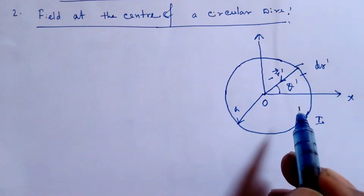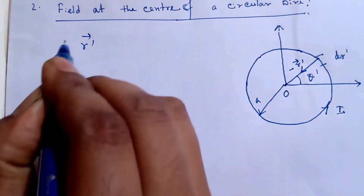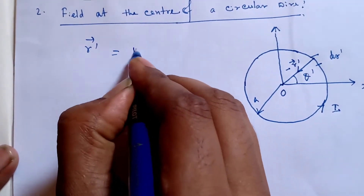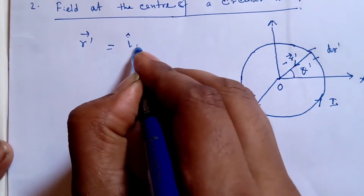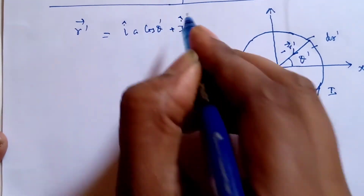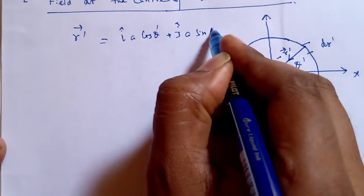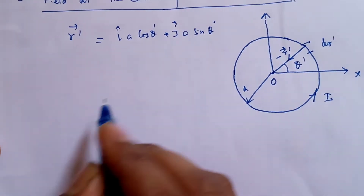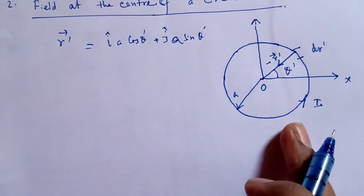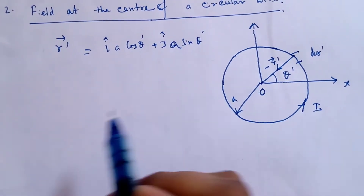In this coordinate system, r' can be written as: r' = î·A·cos θ' + ĵ·A·sin θ', where A is the radius of the circular wire and θ' is the angle.